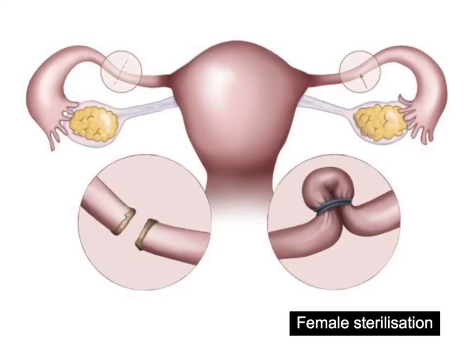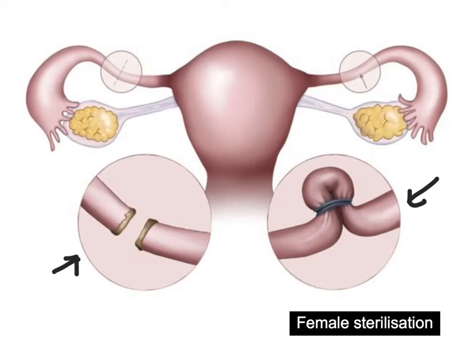This leads on to female sterilisation, a female surgical method of contraception. Here, the oviducts or fallopian tubes are tied or cut. What we're doing is preventing eggs from travelling down those oviducts, so cutting or tying them prevents the egg from reaching any sperm. That's known as female sterilisation. Once again, it is a permanent method of contraception — 100% reliable with no side effects — but like the vasectomy, this can be difficult to reverse, so you really need to consider if this is the option for you.